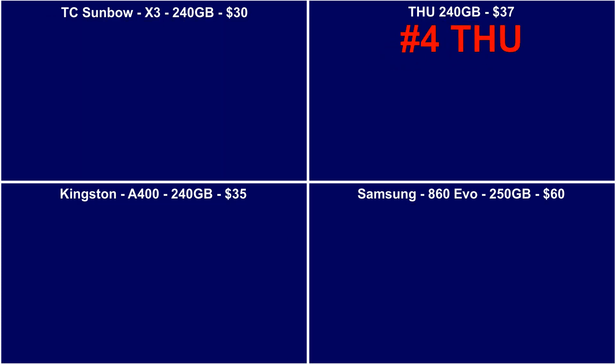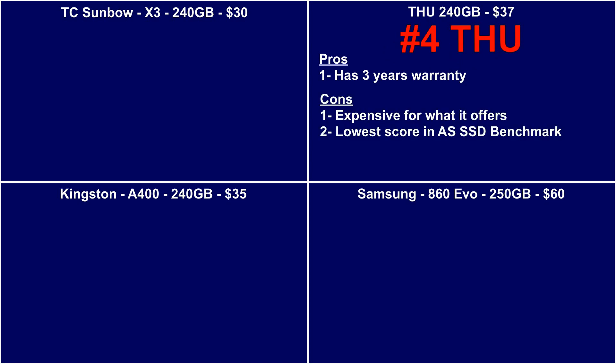Overall, taking all things into consideration, number four on the list is the THU. The pros: it has a three-year warranty. The cons: it is expensive for what it offers and has the lowest score in the AS SSD benchmark. Verdict: I will not recommend it mainly because of its poor value — at $37, it's more expensive than the Kingston and performs worse.